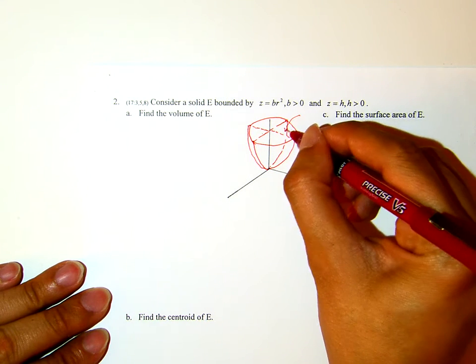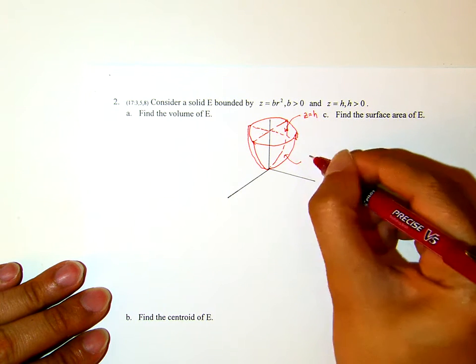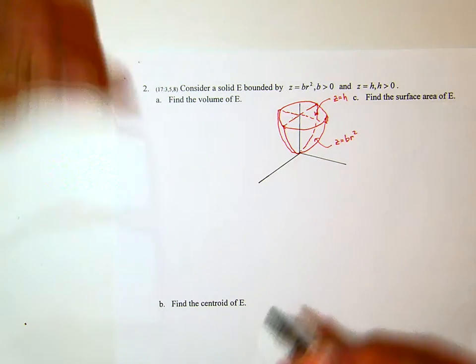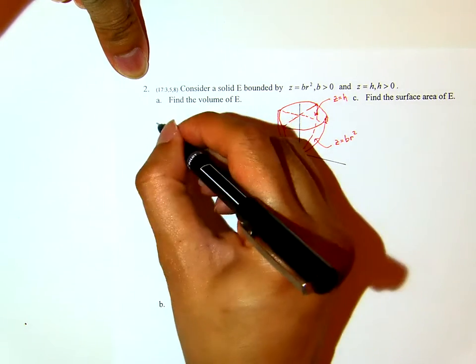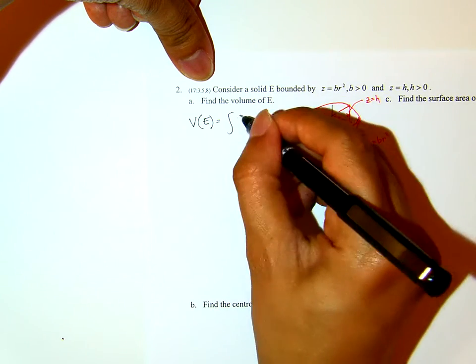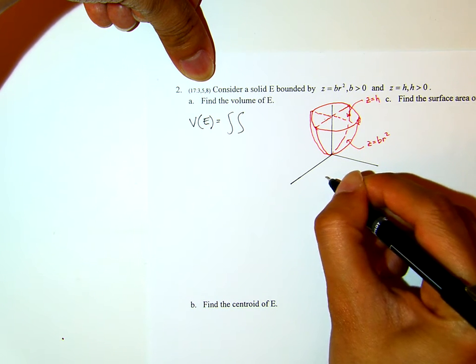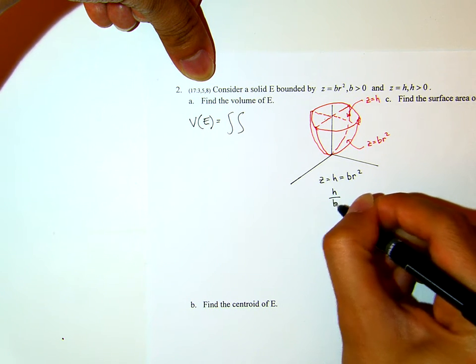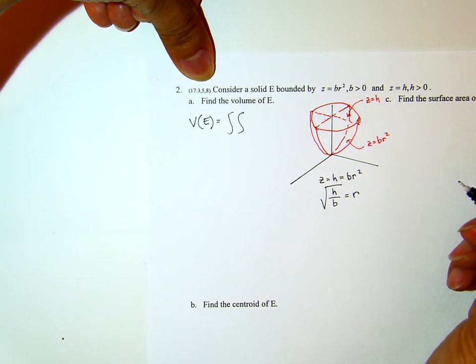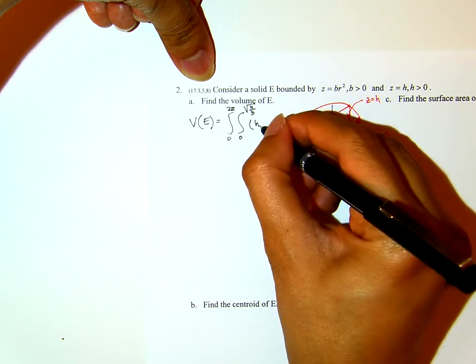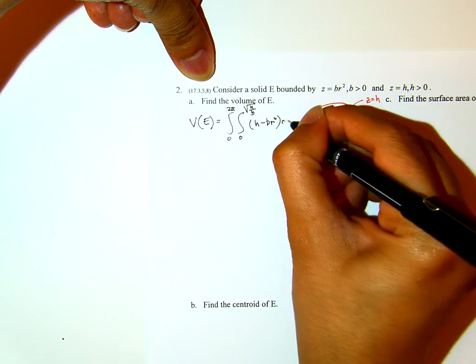The volume of E equals double integral. We have said earlier that the boundary, the domain at the bottom will be given by square root of H over B, has radius square root of H over B. So in the integration it will be from 0 to 2π, and then 0 to square root of H over B.